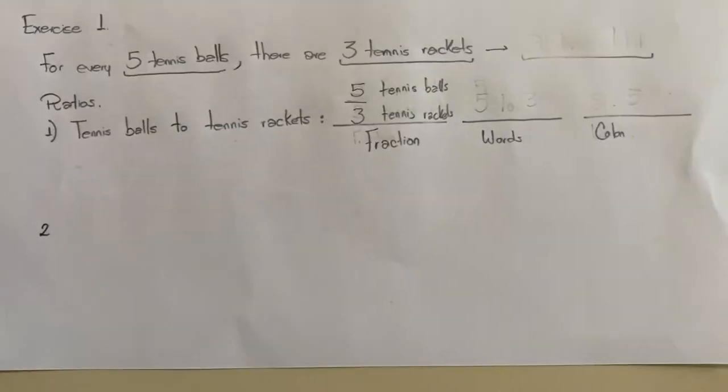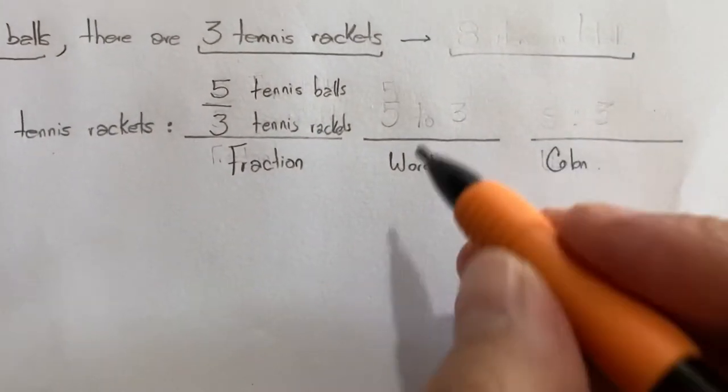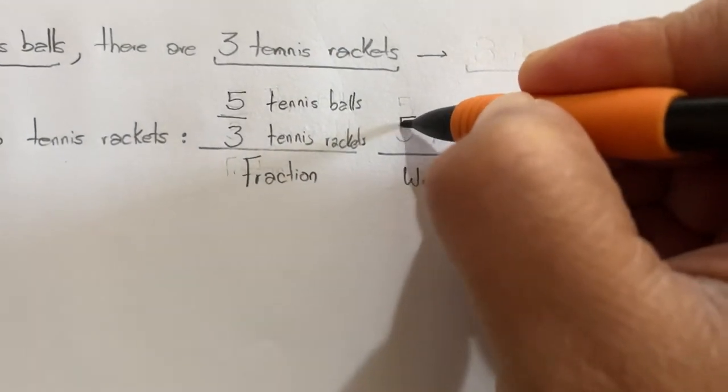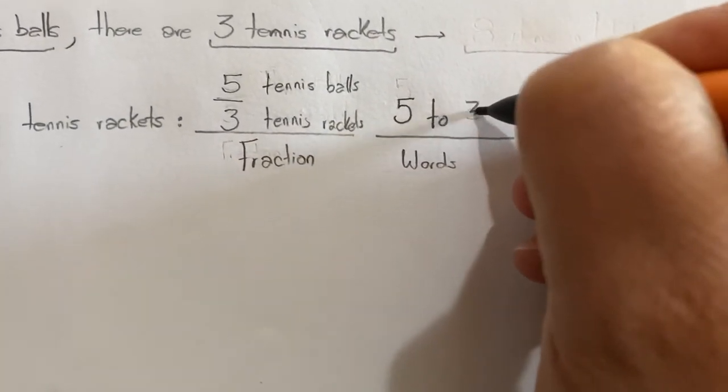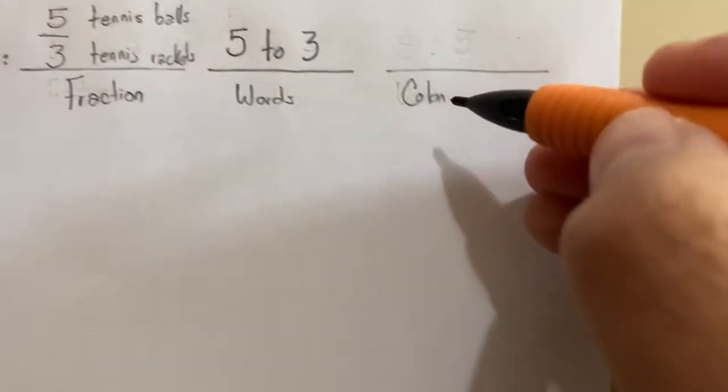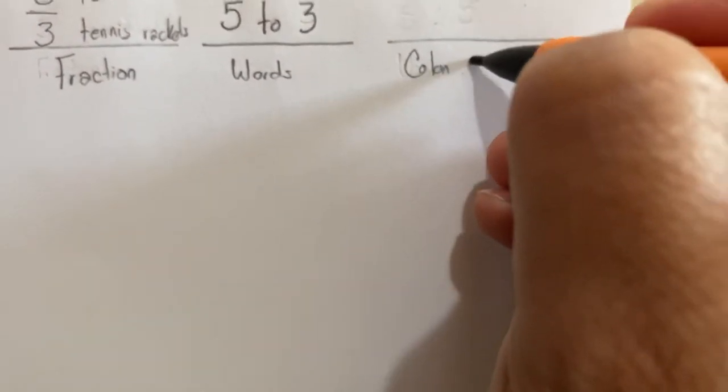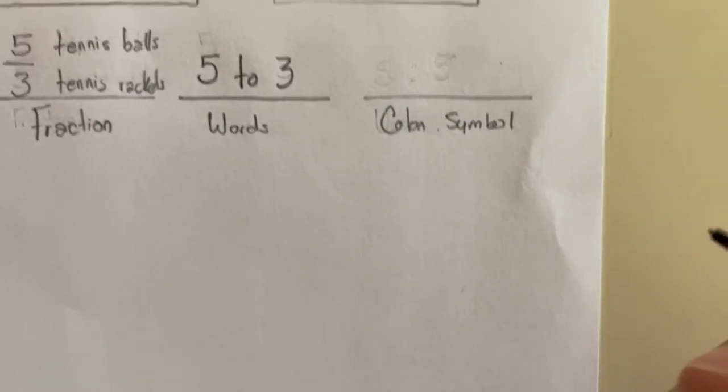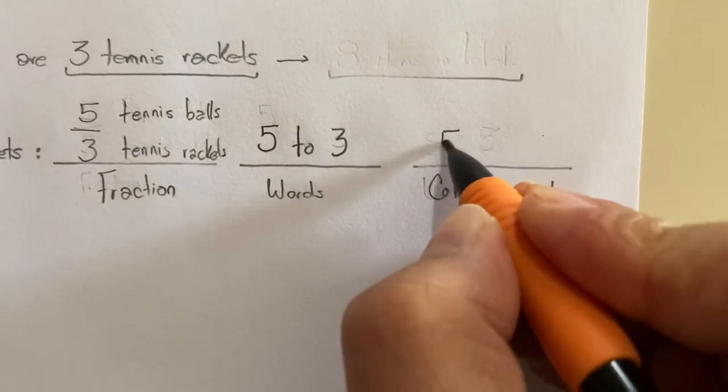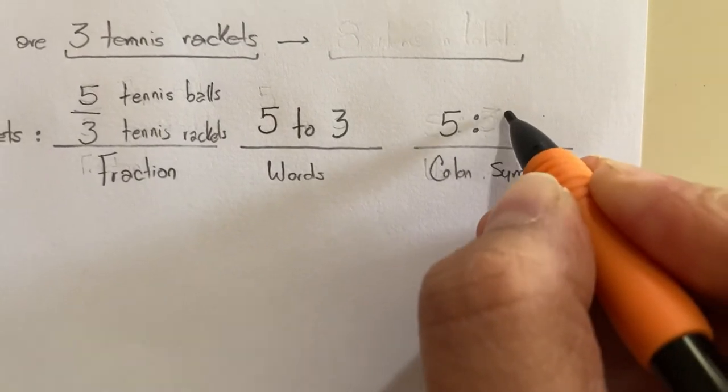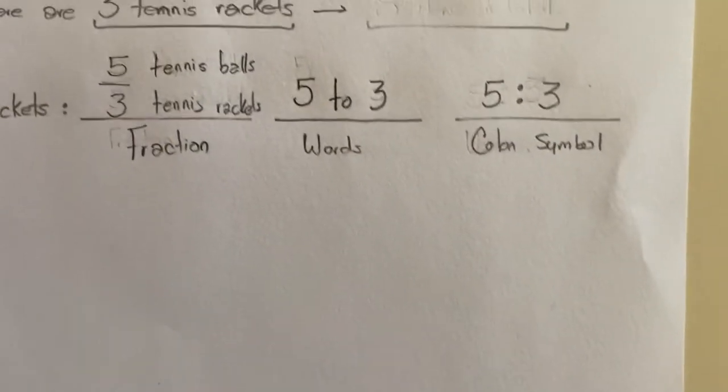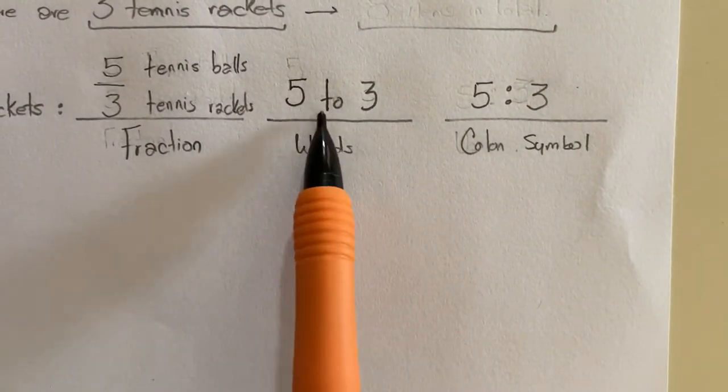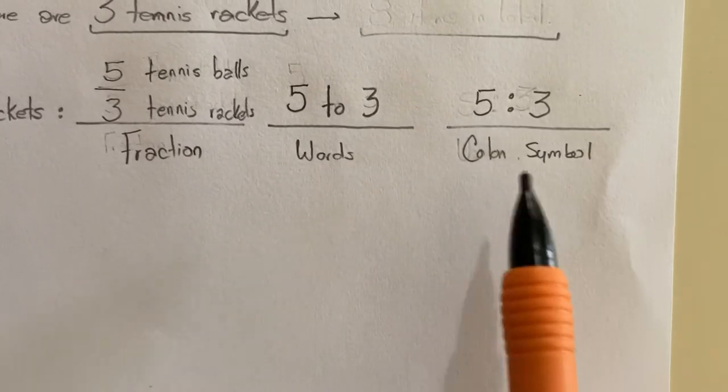But also, you can write it using the word 'to'. So you can write this as five to three. And even you can use the colon symbol. So you can write like five colon three. So there are three different ways: you can write it as a fraction, you can write it using the word 'to', or you can write using the colon.